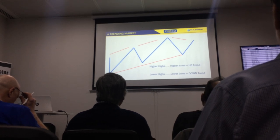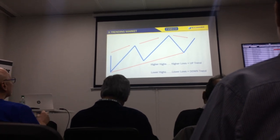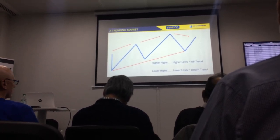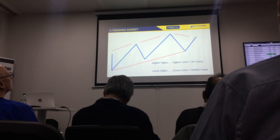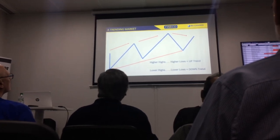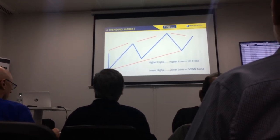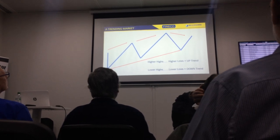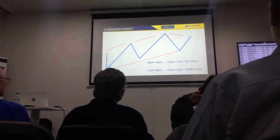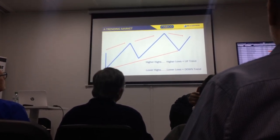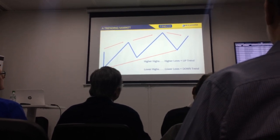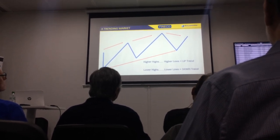You're all aware of what an upward trending market is: higher highs, higher lows, higher highs, higher lows. And then all of a sudden you see this here forming a lower high. If we have a lower high, then we should — if that trend is continuing — be making lower lows.